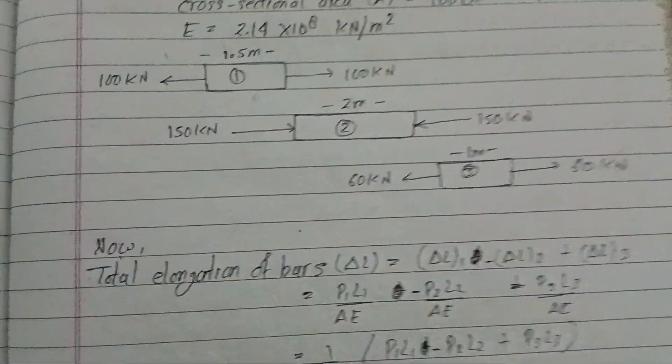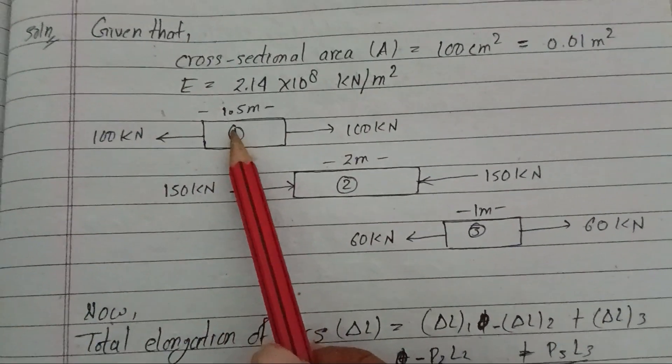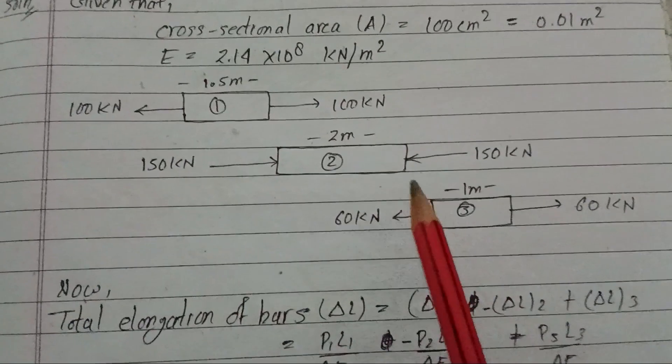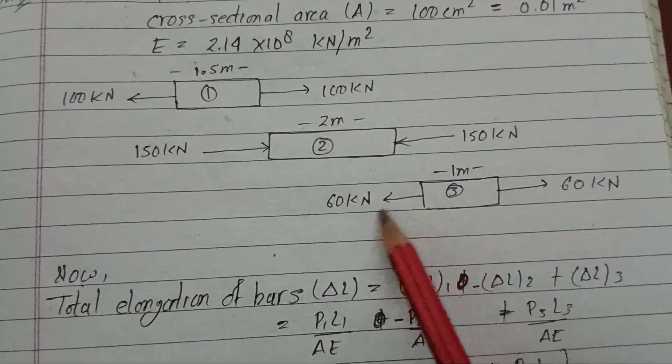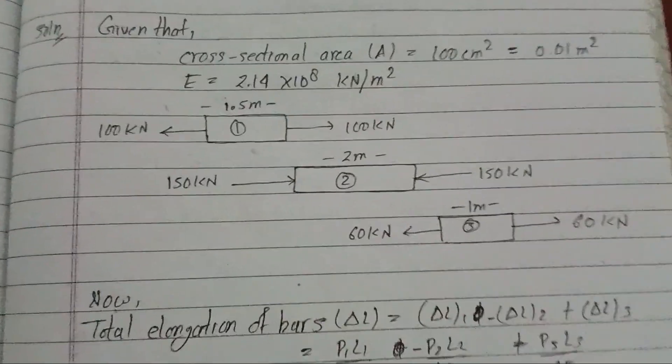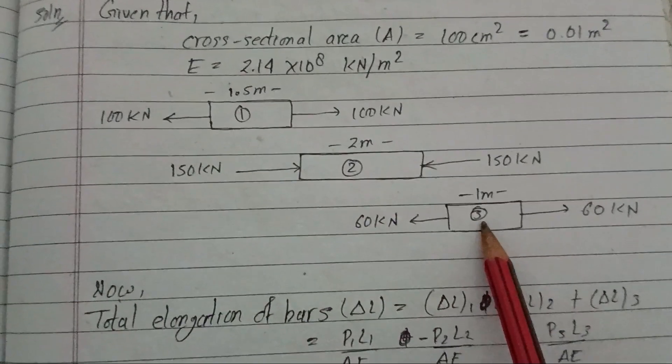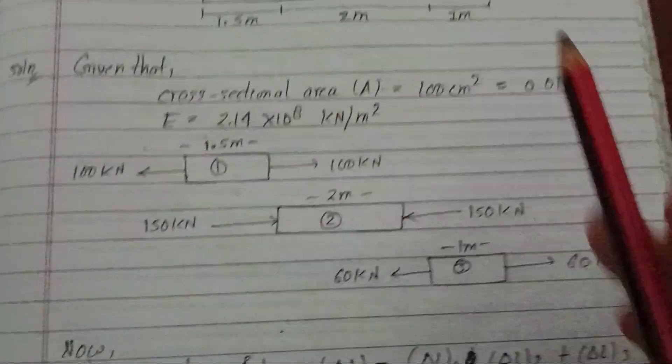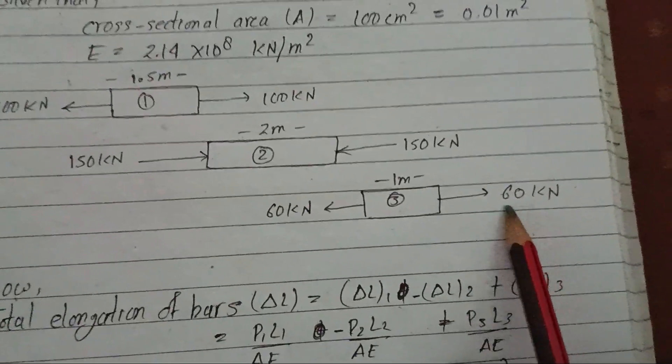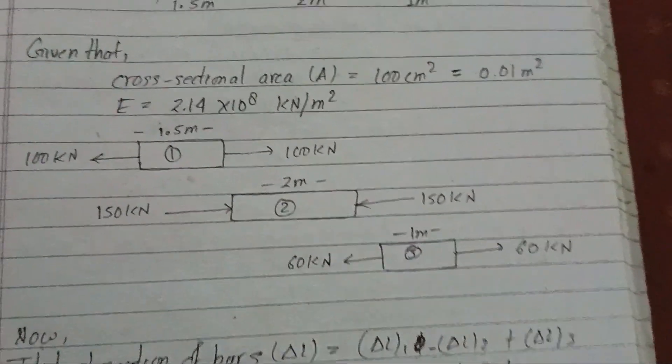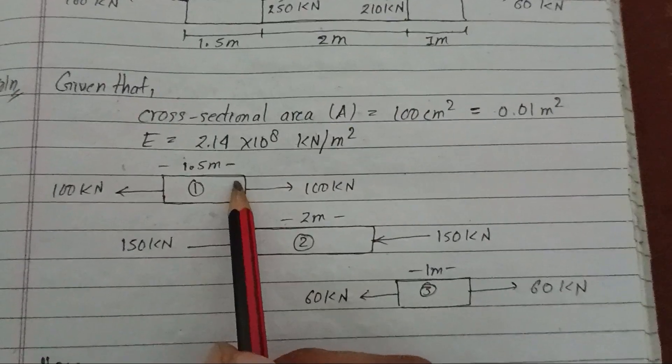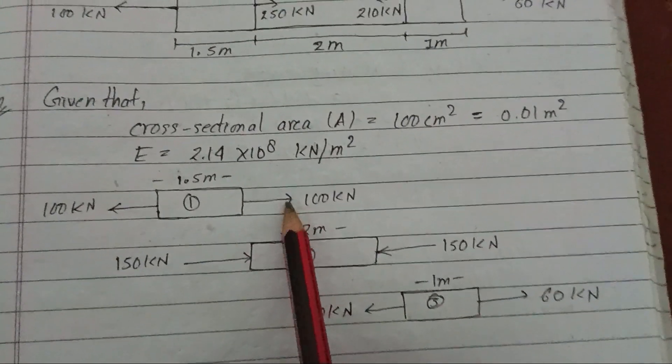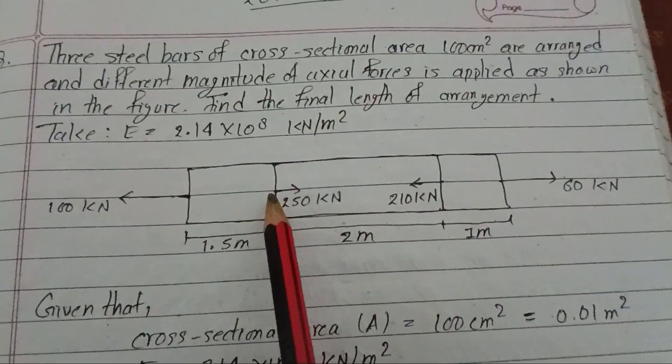Let me draw the diagram. The first bar is 1.5 meter with 100 kilonewton tensile force applied. The second bar is 2 meter length, and the third bar is 1 meter. Now we need to find the direction of forces. The forces are acting in different directions on each section.